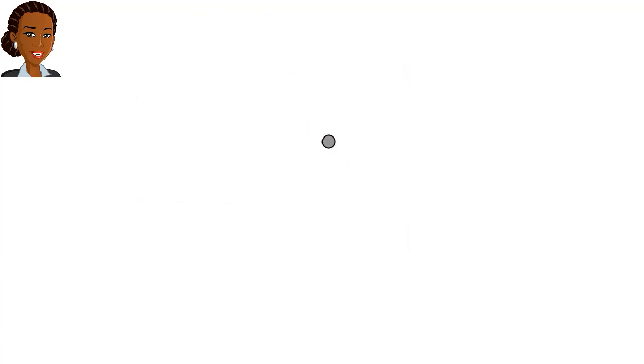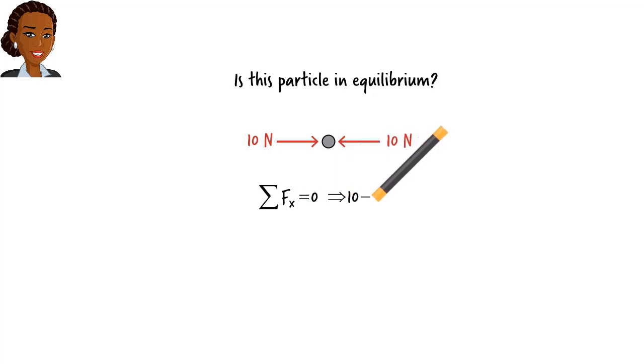For example, this particle is subjected to two forces. Does the particle remain at rest? Is it in the state of equilibrium? To answer the question, we need to see if the two forces add up to zero, if the equilibrium equations are satisfied. Here we need to write only one of the two equilibrium equations, since all the forces act in the horizontal direction. Here is the equation. Obviously, the forces add up to zero, so the particle is in equilibrium.